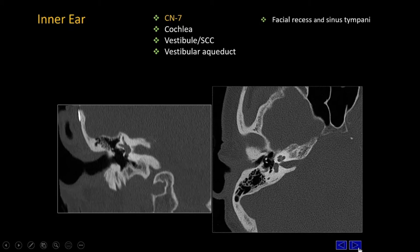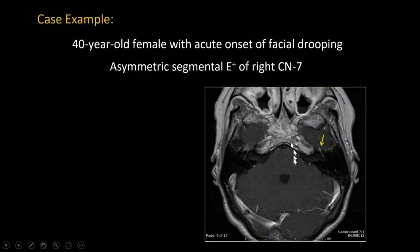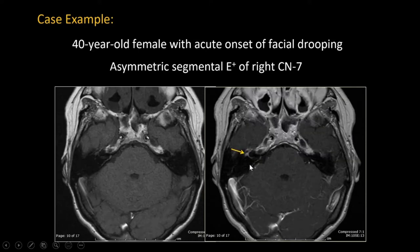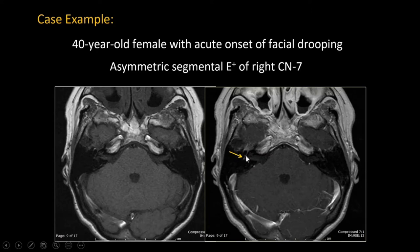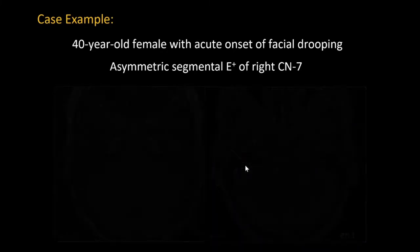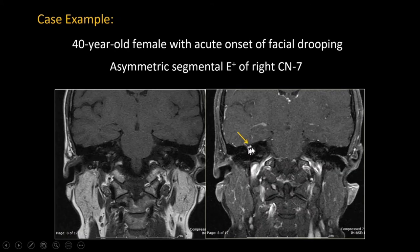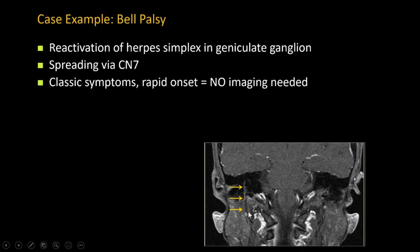Here is an example of a patient presenting with acute right-sided facial droop. Highlighted by the arrow, you can see asymmetric enhancement at the anterior genu. Following the tympanic segment, it is aberrantly enhanced compared to the left side. On the coronal view, you can also follow a very nicely asymmetric enhancement of the anterior genu, and following it backwards, there's asymmetric enhancement of the mastoid segment of the facial nerve. This is Bell's palsy — a reaction of herpes simplex, causing inflammation spreading across the facial nerve.